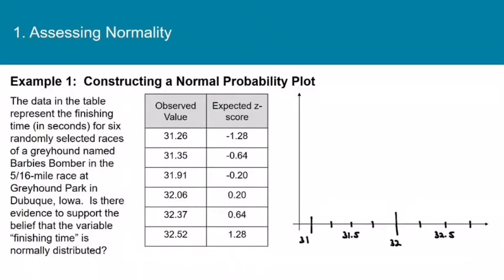For the normal scores they run from negative 1.28 to positive 1.28, so I'm going to label my y axis from negative 1.5 to positive 1.5. Now this first observed value is 31.26, so that would be just about right here. The expected z score is negative 1.28, so that would be up here between negative 1 and negative 1.5. For the second one we have 31.35 and negative 0.64. Then 31.91 and negative 0.20, and negative 0.2 would be up here, just slightly below the zero.